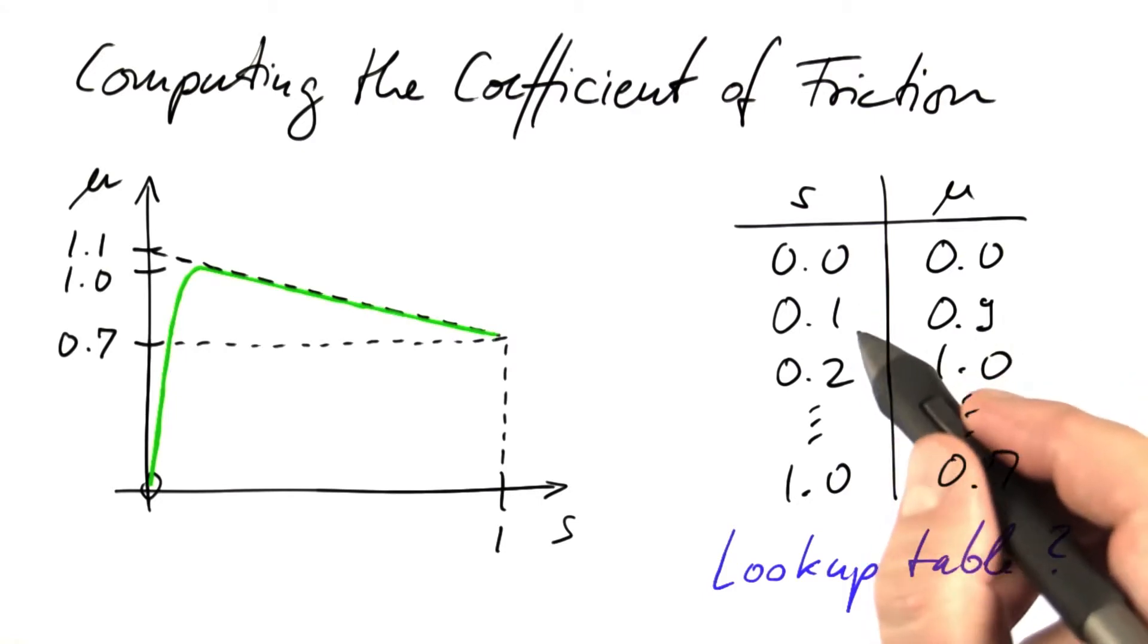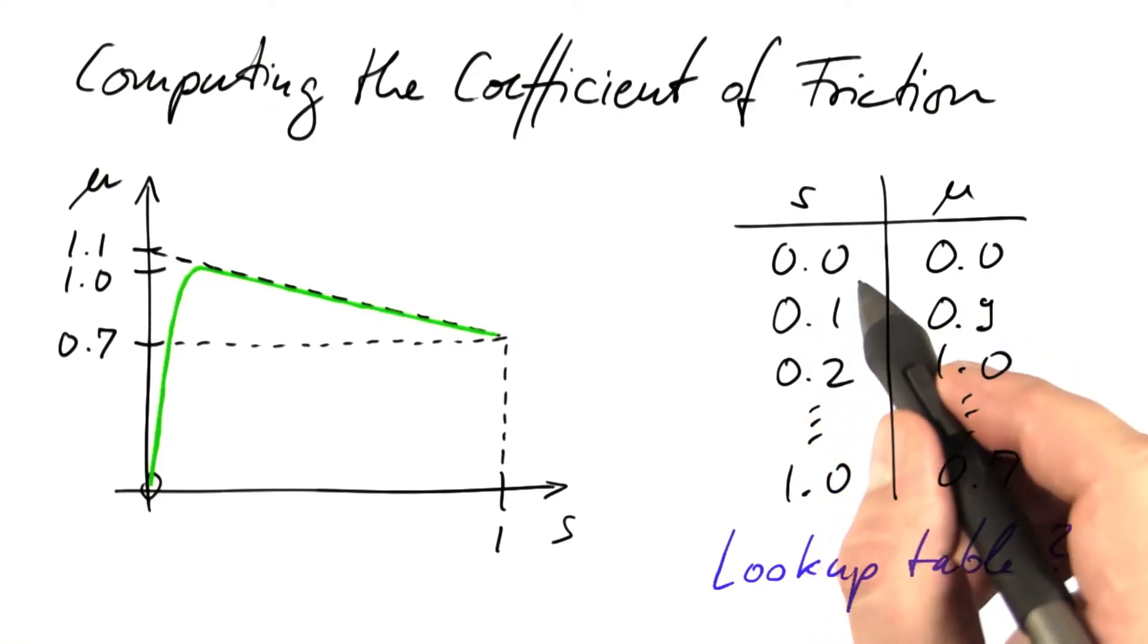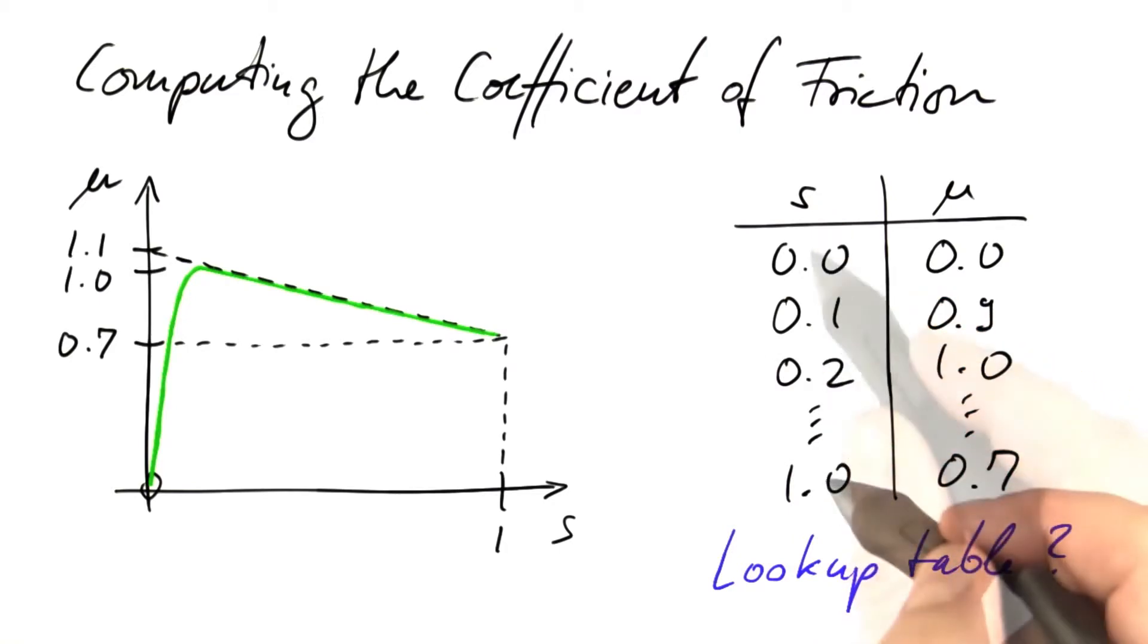The tricky thing is, what would you do for a wheel slip of, say, 0.01234? What do you do about values of s that are not contained in this column? You have to somehow interpolate these values, which gets complex. It is not easy to do in a smooth fashion.